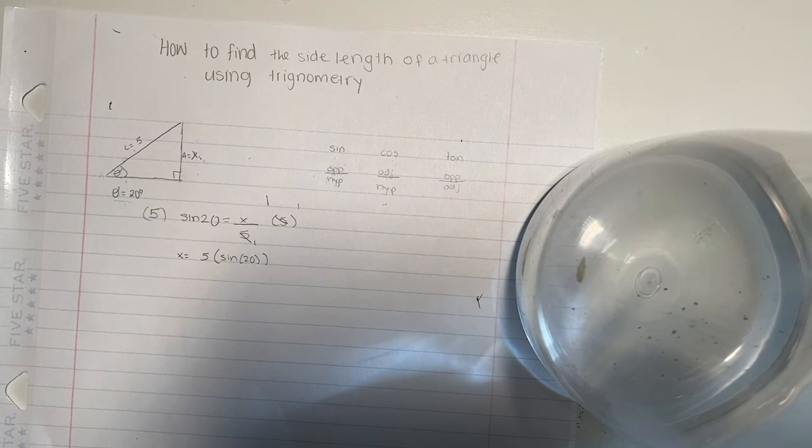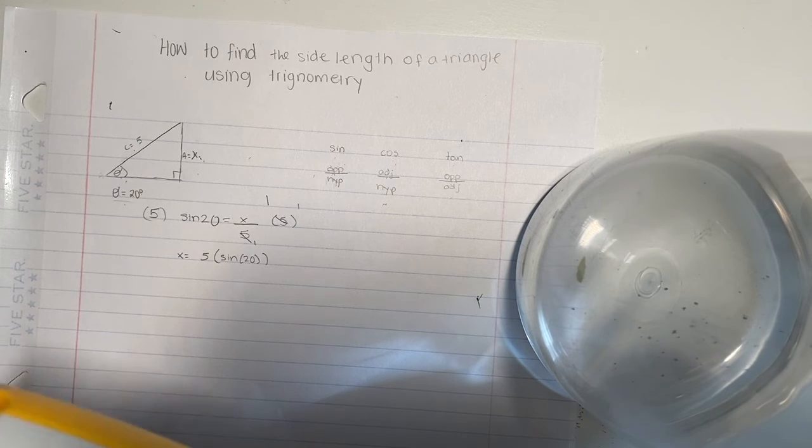So what we have to do is go on our calculator. On the TI-84 calculator, we do sine and then put 20 right there. That will equal 0.342.